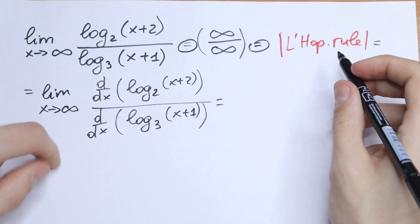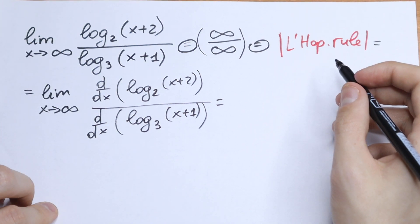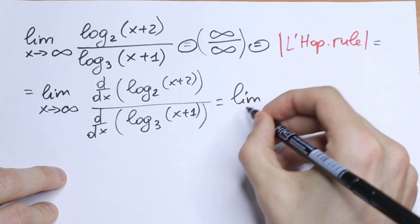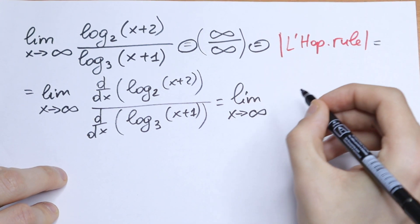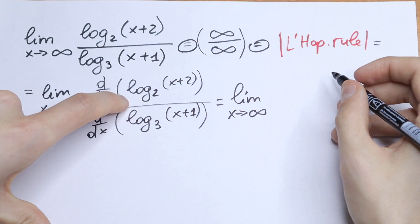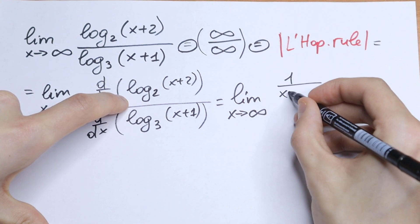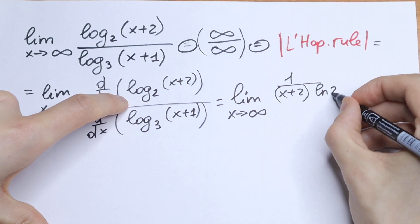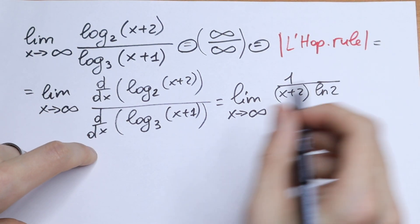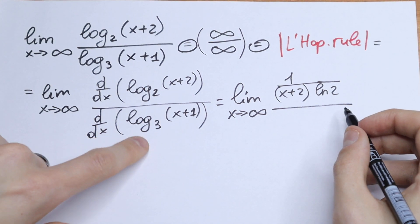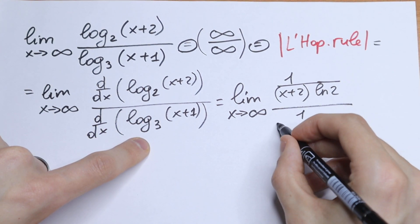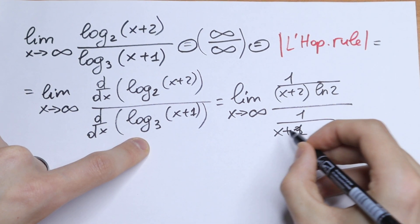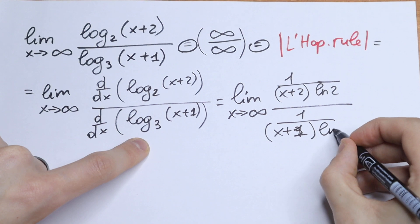So let's find our derivatives using L'Hôpital's rule. The derivative of the numerator gives us the limit as x approaches infinity of 1 over (x+2) times natural log 2. And for the denominator, we will have 1 over (x+1) times natural log 3.